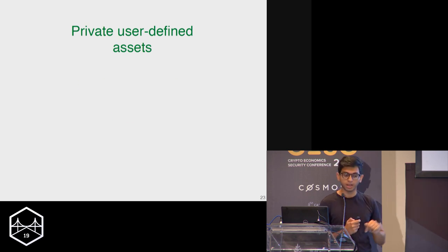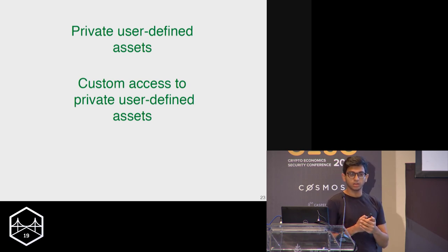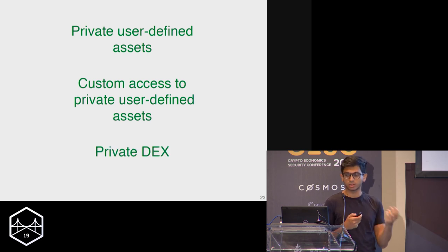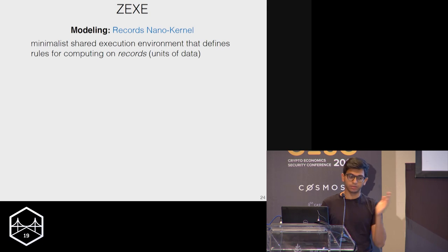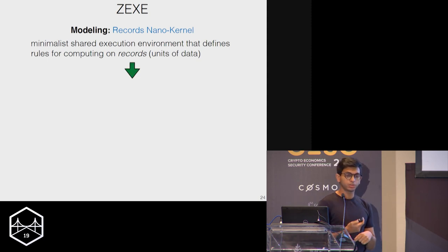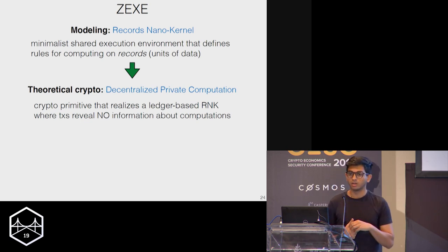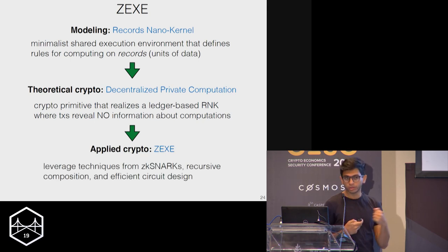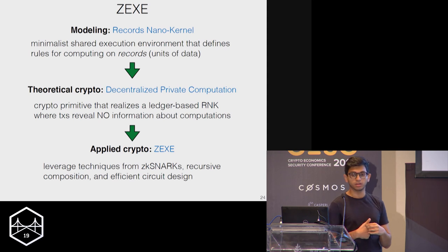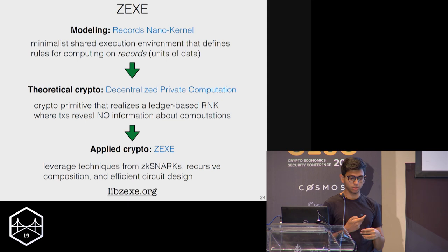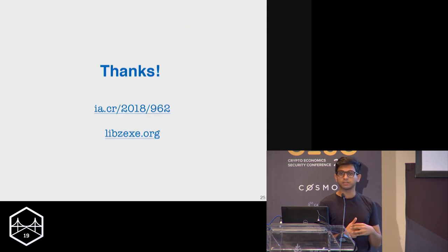In this talk, we saw how to construct private user-defined assets, how to use predicates to program access to those assets, and how to use this programmability to construct a private DEX. In the paper you can find a formal model of the programming model with death predicates, how to realize this with strong privacy guarantees using a cryptographic primitive, and an implementation leveraging SNARKs, recursive composition of SNARKs, and efficient circuit design to get one-kilobyte transactions and tiny verification times. The code and paper are both available online.